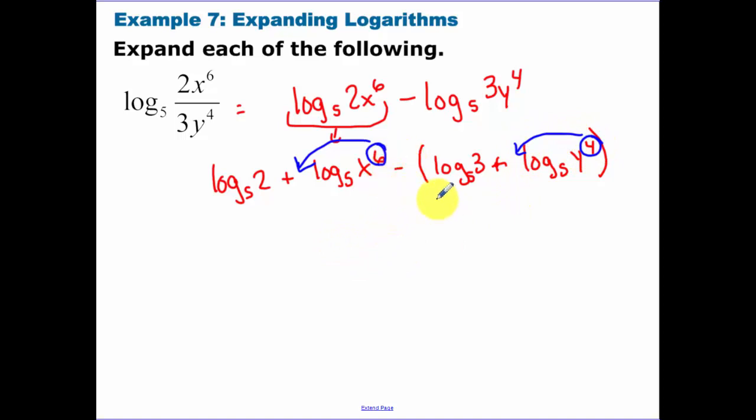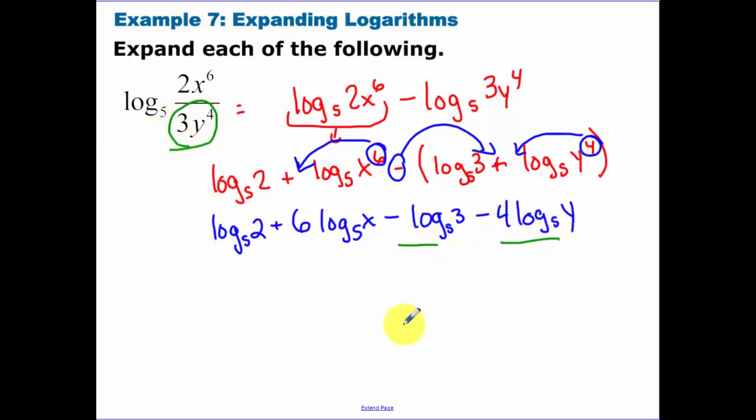Now what we can do is bring down any of the powers. So I'm going to bring the 6 down and make it a coefficient, bring the 4 down and make it a coefficient. And notice how I have a negative sign and I put this second piece all in parentheses, because both the 3 and the y to the 4th were both in the denominator. So I bring down the 6. That's the most common mistake. Students forget that they can bring down that 6 and make it a coefficient. And that is completely expanded. Minus log base 5 of 3, now remember to distribute this negative sign also to the second term. Notice how anything that was dealing with the denominator of our original problem, those terms end up being negative.